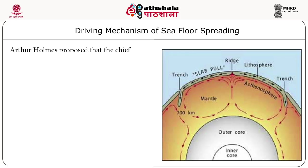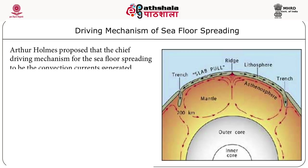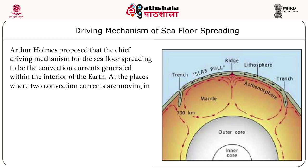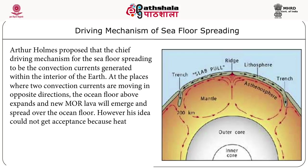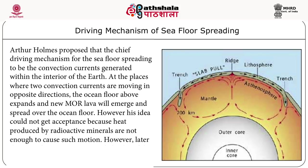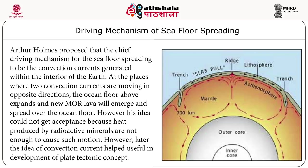The driving mechanism for seafloor spreading was proposed by Arthur Holmes to be convection currents generated within the interior of the Earth. At places where two convection currents move in opposite directions, the ocean floor above expands and new mid-oceanic ridge lava emerges and spreads over the ocean floor. This idea initially could not gain acceptance because heat produced by radioactive minerals was not enough to cause such motion. However, the idea of convection currents later proved useful in the development of plate tectonic concept.